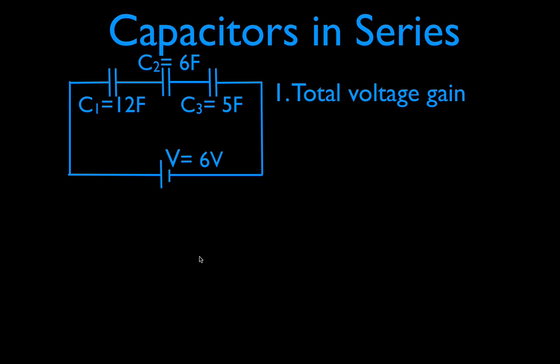The first thing we're going to do is figure out what is the total voltage. This is very easy. We have one battery right here. It's 6 volts, so that means the total voltage in the circuit is 6 volts — basically just saying we have a 6-volt battery.